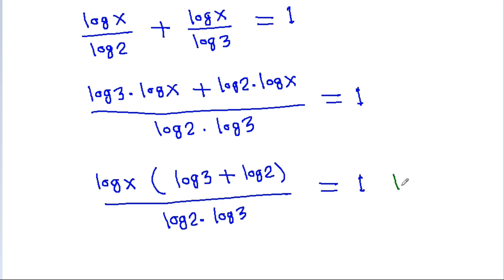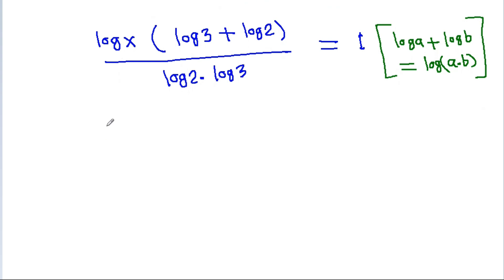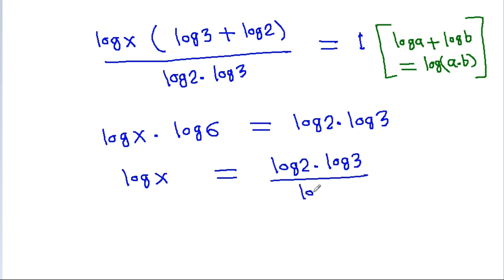Using log a plus log b equals log a times b, we take log x as common to get log x times log 6 equals log 2 times log 3. So log x equals log 2 times log 3 divided by log 6.